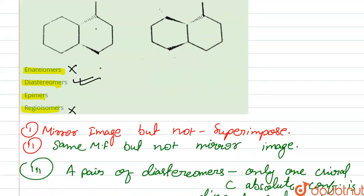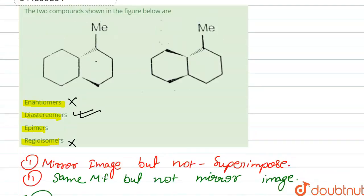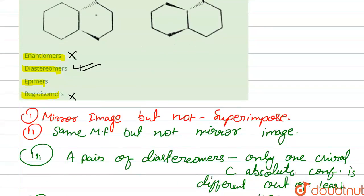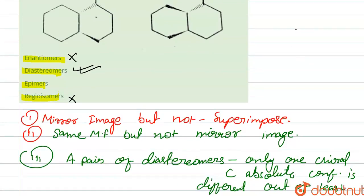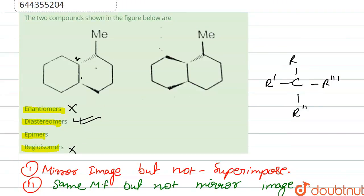For epimers: it is not a mirror image, so it is a diastereomer. But epimers require only one chiral carbon to have a different absolute configuration. A chiral carbon is a carbon attached to four different groups — for example, four different alkyl groups.